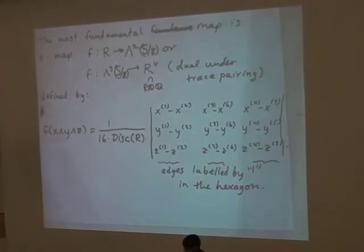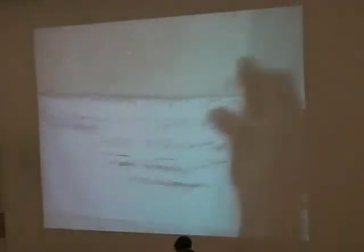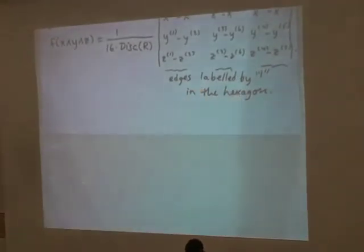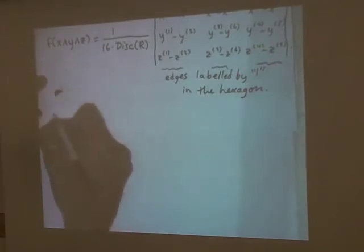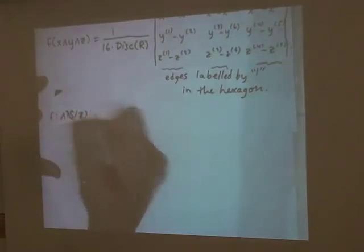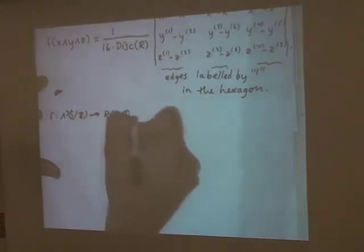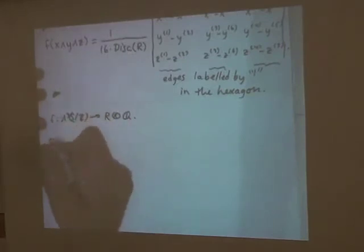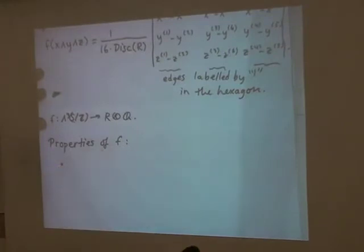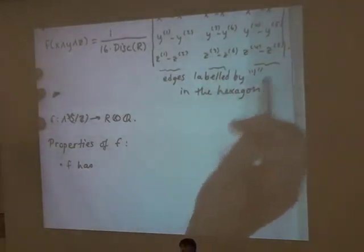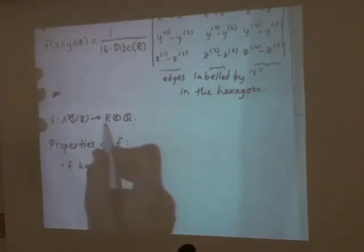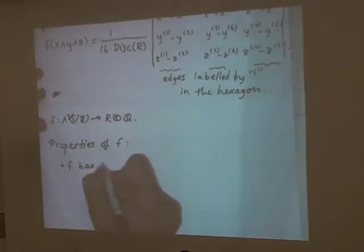Now I want to talk about the properties of F. F is a map from wedge 3 of S mod Z to R tensor Q. Since it's mapping into R tensor Q, it has five conjugate maps F1 up to F5, where we could have taken the edges labeled by 2, 3, 4, or 5 instead. Each would go to a different conjugate of R.